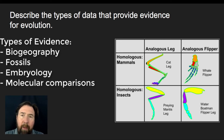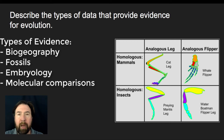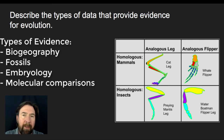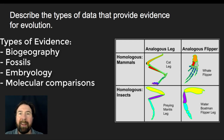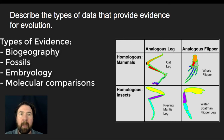We've also used structures like embryology — how things look during development — and molecular techniques of comparing nucleotide sequences, which has played a huge role in how we compare organisms to find their common ancestry.